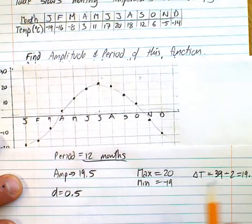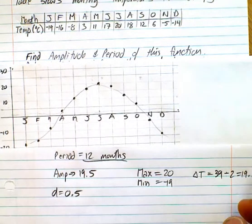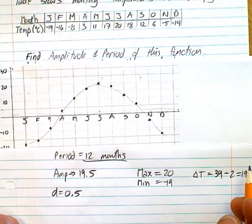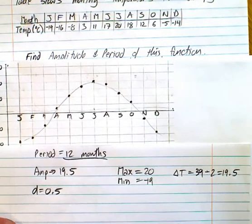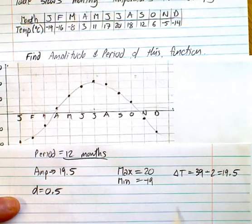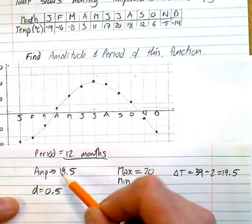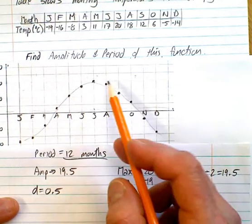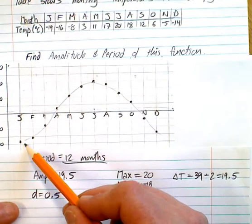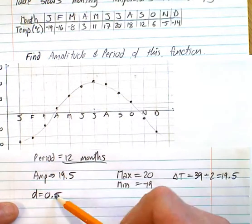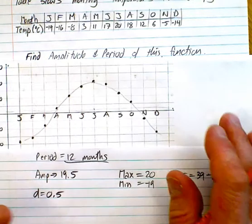So the datum, or the midpoint, is a crucial piece of information to find. And we can find it by finding the amplitude and then taking away from the max. 20 minus 19.5 is 0.5, or adding it to the min. Negative 19 plus 19.5 is 0.5. So now we've got the D value as well.